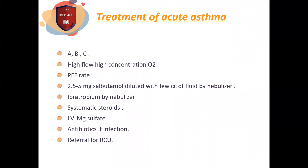For treatment of asthma, there is acute exacerbation management and maintenance treatment. In acute exacerbation: A — airway must be patent; B — assess respiratory rate and SpO2 with rapid chest examination and auscultation; C — pulse rate and blood pressure, and establish IV access. Administer oxygen at high concentration of 40–60%. Monitor peak expiratory flow rate before and after specific treatment regularly to show the patient's response.